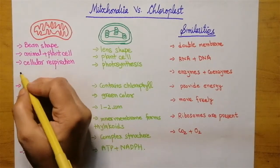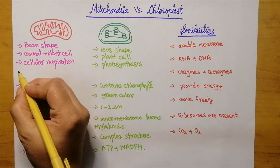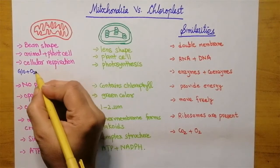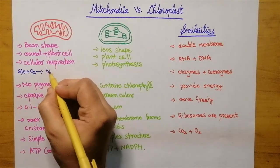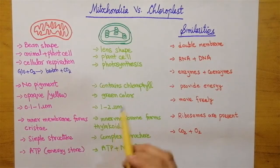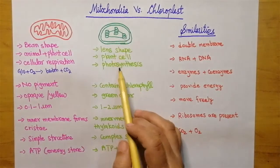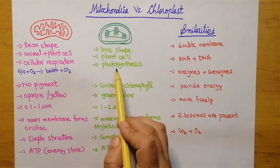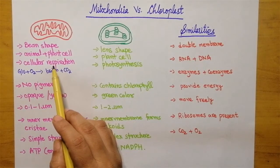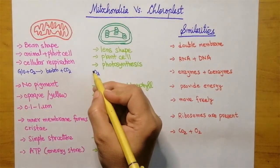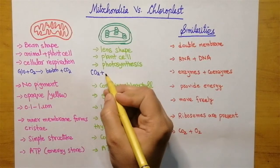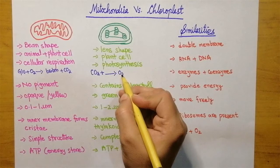In mitochondria, cellular respiration takes place. Cellular respiration is the breakdown of food — for example, glucose — in the presence of oxygen. It is broken down and carbon dioxide is eliminated. While in the case of chloroplast, photosynthesis takes place.